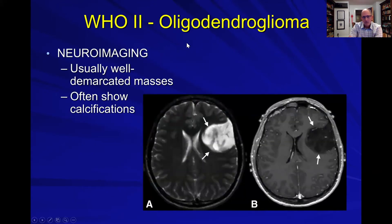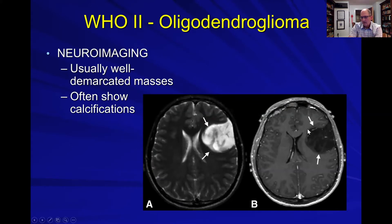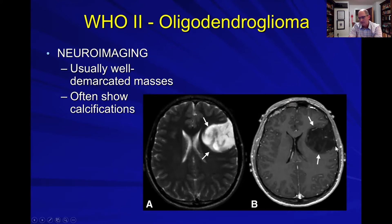On imaging, oligodendroglioma looks a lot like the other grade two tumor we looked at — the grade two astrocytoma. Again, very well demarcated, non-enhancing. Dark on T1 but bright on the T2 sequences. This is a very good example of how these oligodendrogliomas seem to get right out to the pial surface, and you can imagine how these are very irritative to that cortex.